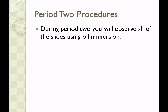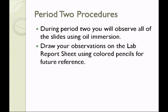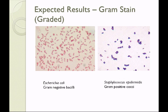In period 2, you will observe all the slides you prepared using oil immersion and draw your observations on your lab report sheet using colored pencils. Your Gram stain will be graded — focus on one of the two specimens under oil immersion and call the instructor over. Escherichia coli will present as Gram-negative bacilli; Staphylococcus epidermidis will present as Gram-positive cocci. If it doesn't work, you can stain your other slide or restain during the next lab period. You will have multiple opportunities to get this right.